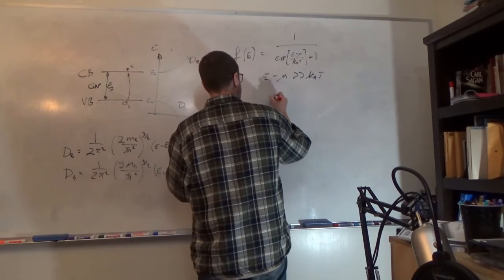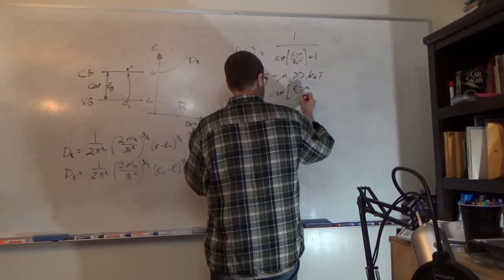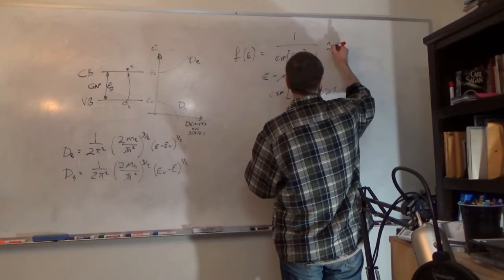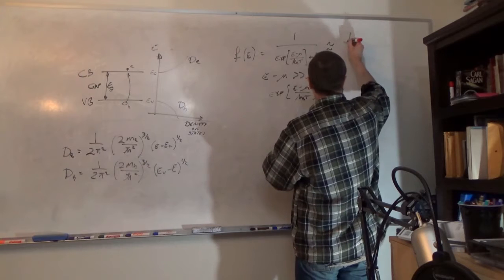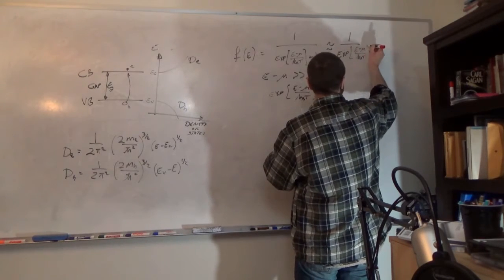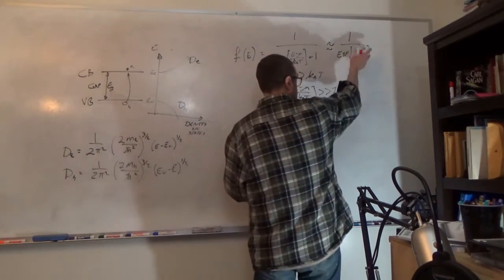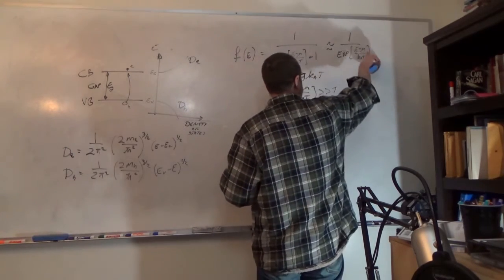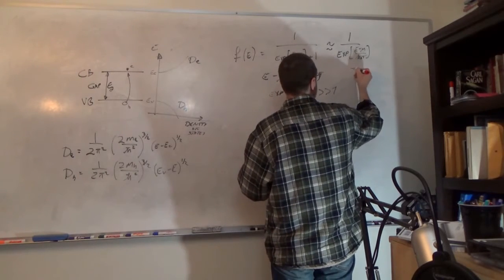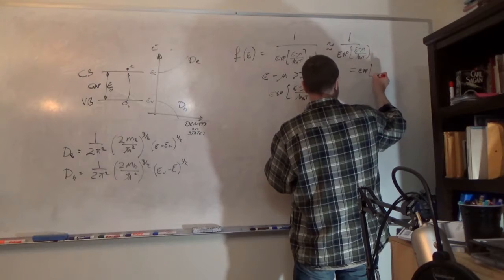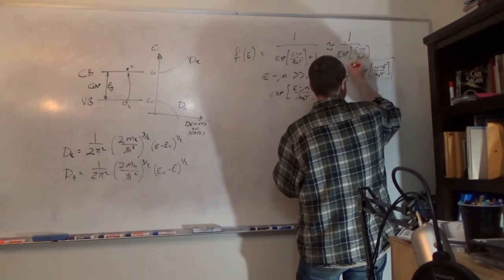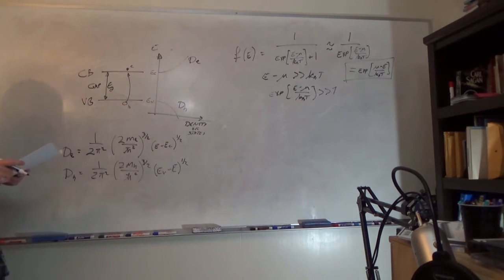When exp((E−μ)/k_BT) is much larger than one, we can take the approximation that f(E) ≈ exp((μ−E)/k_BT). That is the approximation we can take for the Fermi-Dirac distribution. For holes, f_h = 1 − f(E), and using the same approximation, f_h ≈ exp((E−μ)/k_BT).